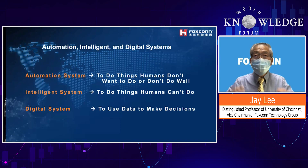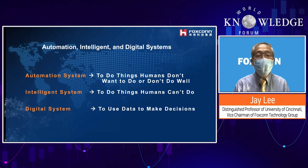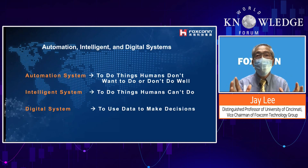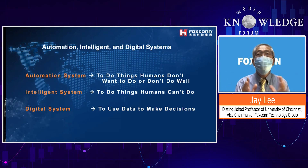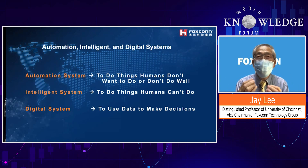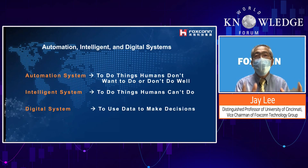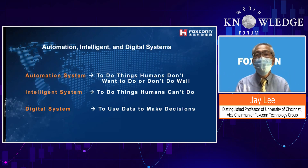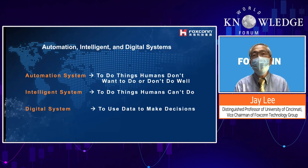In terms of intelligent automation: automation means getting the system to do things people don't want to do — boring, dirty, dark work — or things people can't do fast enough. But intelligent systems do what people cannot do at all. For example, I want to measure the dimensions of a hundred holes — my eyes cannot tell, but machine vision can.